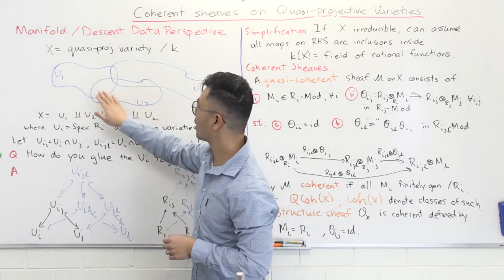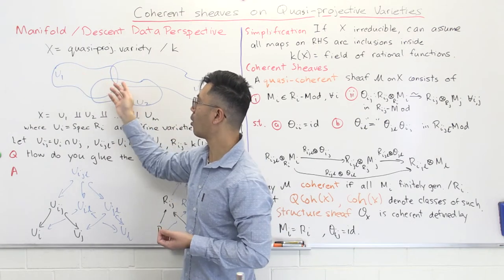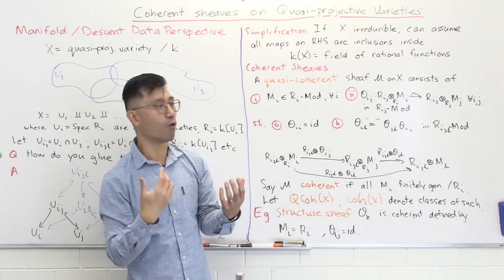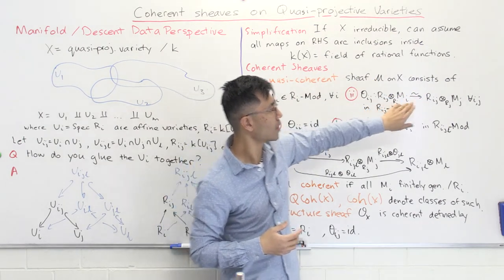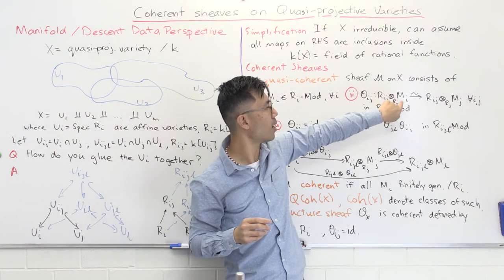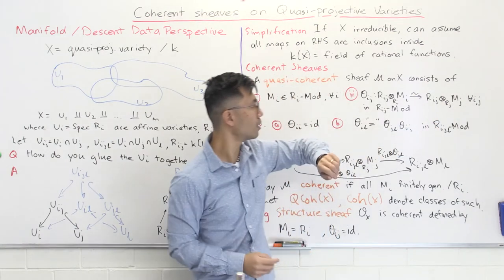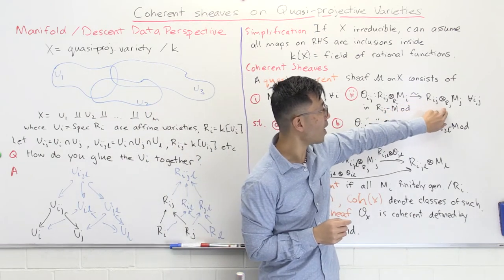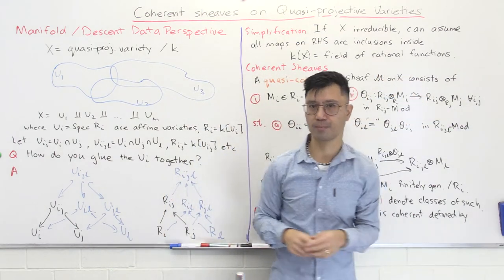You've defined the sheaf on each patch, and since a sheaf assigns an abelian group to every open subset, you need to say that on the intersections they define the same thing. The way we do this is by gluing — that's the descent data — which we also saw for coherent sheaves on the projective line. So we need gluing data θᵢⱼ: we restrict the sheaf Mᵢ to the intersection, giving Rᵢⱼ ⊗_{Rᵢ} Mᵢ, and similarly Rᵢⱼ ⊗_{Rⱼ} Mⱼ, and we want an isomorphism of Rᵢⱼ-modules between them, for any pair i, j.